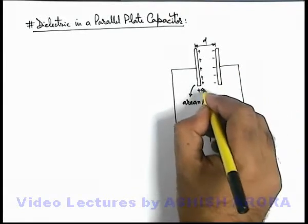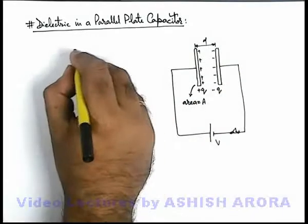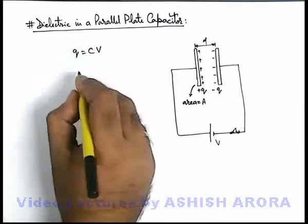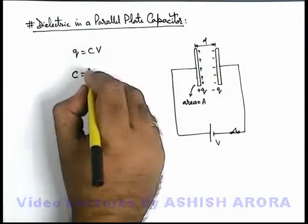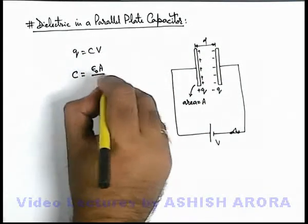In this situation the charges are plus q and minus q, and we know the charge will be CV. And the capacitance can be written as epsilon not A by d.